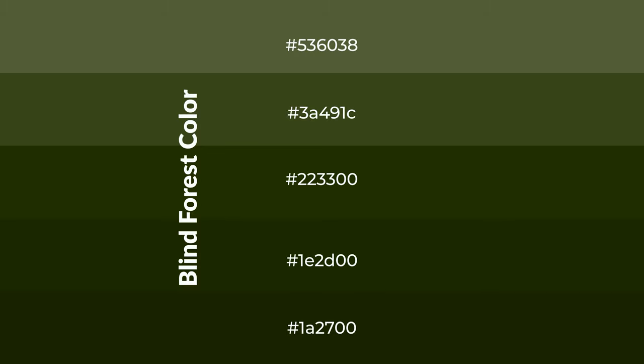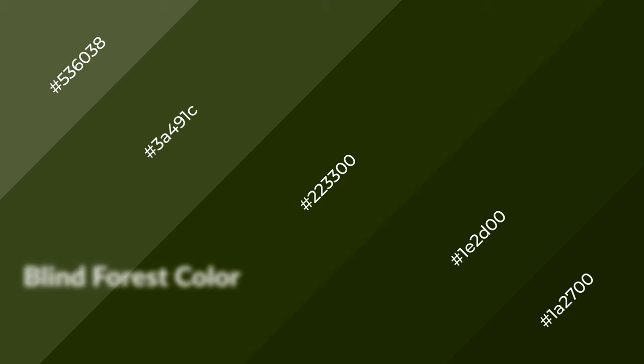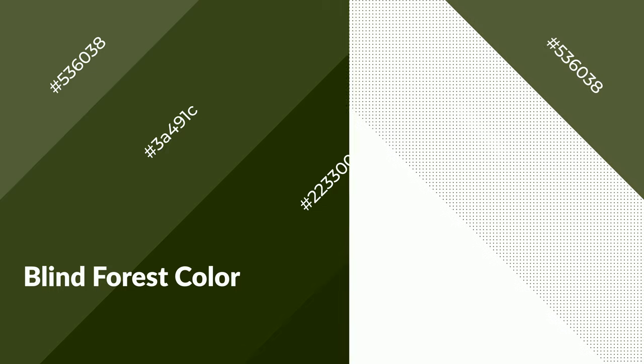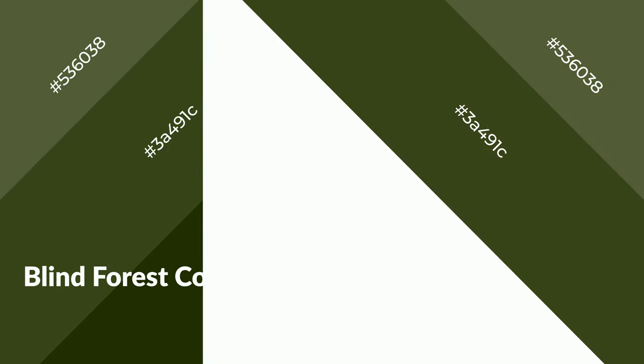To generate shades of a color, we add black to the color. Shades are used in patterns, 3D effects, and layers, and they create depth and drama. Blind forest is a warm color and it emits cozier and active emotions.